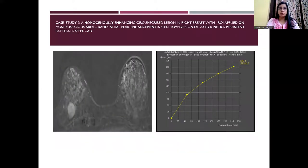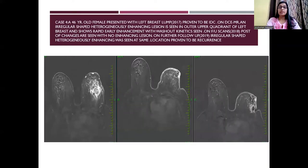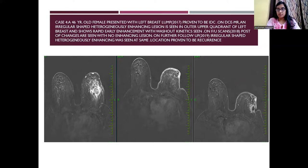Shown here is a homogeneously-enhancing circumscribed lesion in the right breast with ROI applied on the more suspicious area, showing rapid initial peak enhancement with a delayed kinetic persistent pattern. Another case: a 46-year-old female presented with left breast lump in 2017, proven to be IDC. On DCE-MRI, an irregular-shaped heterogeneously-enhancing lesion is seen in the outer upper quadrant of left breast, which shows rapid early enhancement and washout on delayed kinetics. On further scan in 2018, post-op changes are seen with no enhancing lesion, but on follow-up in 2019, another heterogeneously-enhancing lesion was seen, proven to be recurrence.